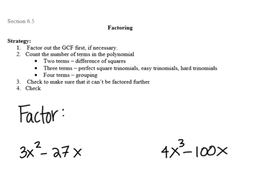Your strategy starts like this. The first thing you're going to do every time is look for a greatest common factor. Once you get the greatest common factor, if it has one, you're going to count the number of terms. If it has two terms you can try squares. If it has three terms that means it's a trinomial - it can be an easy trinomial from section 6.2, a hard trinomial from section 6.3, or a perfect square trinomial from section 6.4. If it has four terms you're going to work it by grouping. Always check to make sure that it can't be factored further.